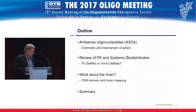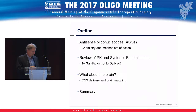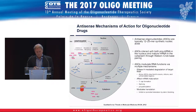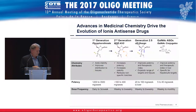The outline here: we're going to go through antisense oligonucleotide mechanism at a very high level for this group, then review some of the PK and systemic biodistribution for both the GalNAC conjugates and the non-conjugates to further define the data underlying our understanding and design of those molecules. Then I'll ask the question: what about the brain? We're doing a lot of work in the CNS, so I'll talk about what we're learning early on regarding oligo distribution in the brain.